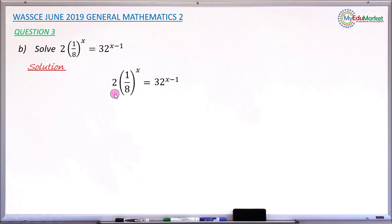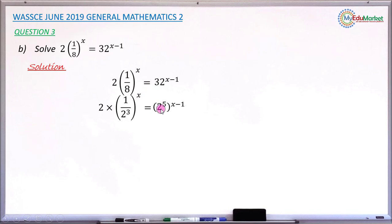What we do first is change those numbers like 8 and 32 to index form. 8 can be written as 2 raised to 3; similarly, 32 can be written as 2 raised to the power of 5. So instead of 1 over 8, we now have 1 over 2 raised to 3, raised to the power of x. And 32 changes to 2 raised to the power of 5, with the power of x minus 1.